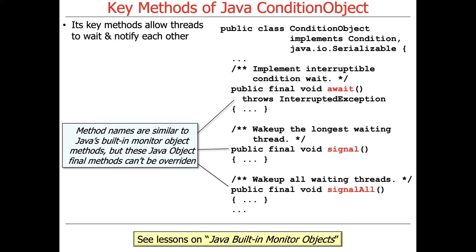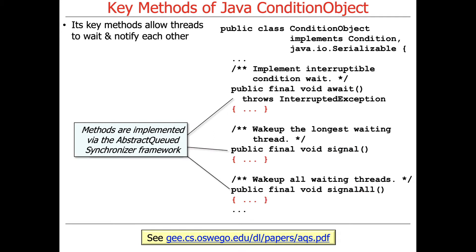Why they did it that way? It's probably because they didn't realize at the time that they would need to have more than one Condition Object in a user-defined or app-defined Object. They just didn't think ahead. But they're final, so we're stuck with them, and this actually causes a bit of consternation, as we'll see.